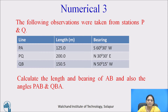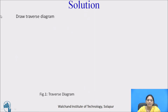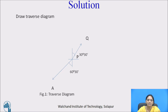The question is: calculate the length of line AB and also find the angle PAB and angle QBA. Let us first draw the traverse diagram, starting from station P. The bearing of line PQ is in quadrant north-east with bearing 30 degree 30 minutes, as shown in the diagram, and line QB is also given here.